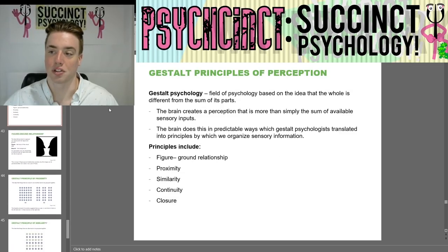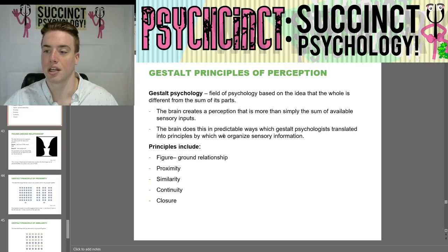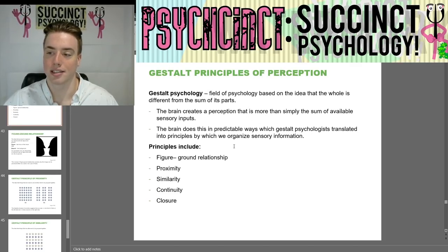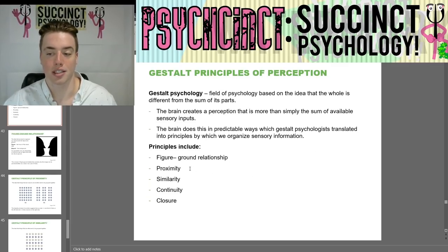Now we have gestalt principles of perception. Gestalt psychology is the field based on the idea that the whole is different from the sum of its parts. The brain creates a perception that is more than simply the sum of available sensory inputs, in predictable ways, which gestalt psychologists translated into principles by which we organize sensory information. Principles include figure-ground relationship, proximity, similarity, continuity, and closure.